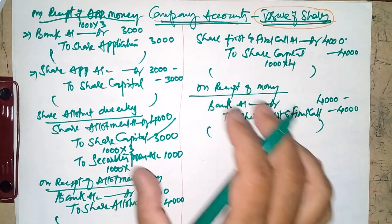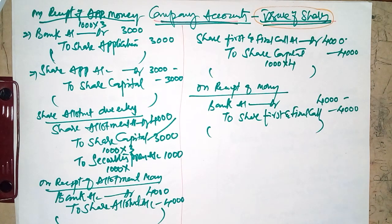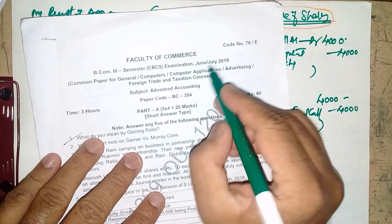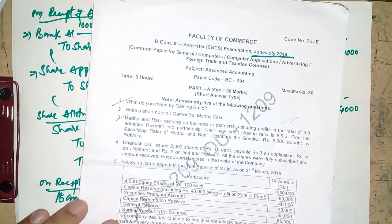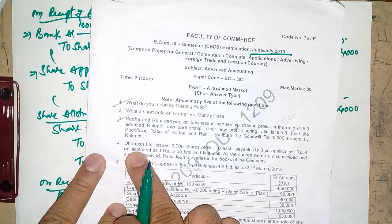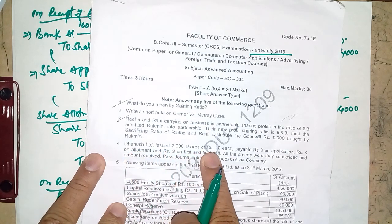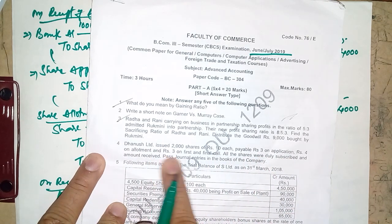This simple question was asked in the Usmani University 2018 question paper. Now we take up the next question — the 2019 paper. In this paper also a four-mark question was asked. Danush Limited issued 2000 shares of rupees 10 each, payable: three on application, four on allotment, and three on first and final call.